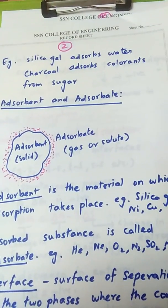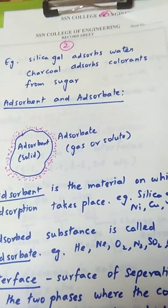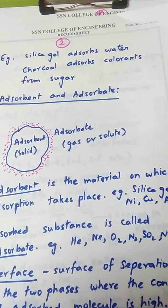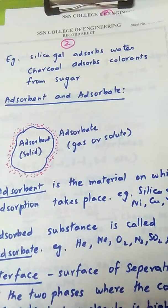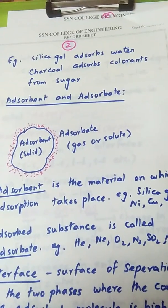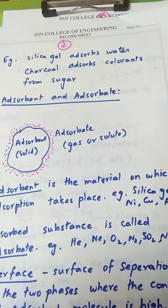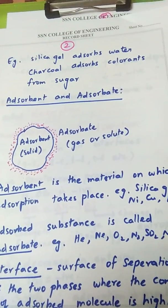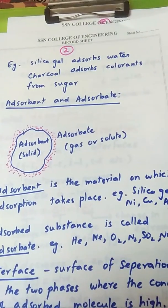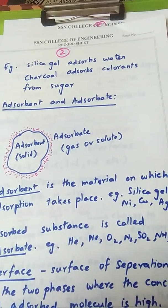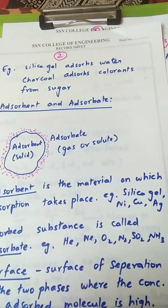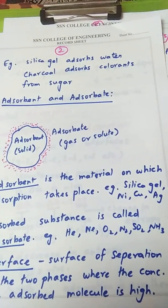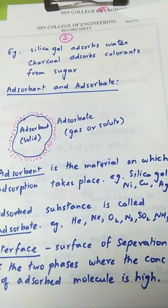Examples: silica gel adsorbs water; charcoal adsorbs colorants from sugar. In the manufacture of sugar, the sugar extracted from sugarcane juice is brown in color. That brown color is removed by treating it with charcoal, which adsorbs the coloring substances and leaves the sugar colorless. Similarly, small granules of silica gel, when put in water, convert to big globules because the water is adsorbed onto the silica gel.